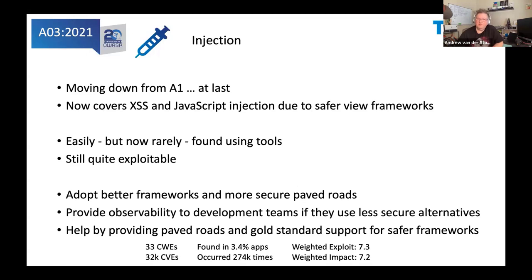A3: Injection is still in the top 10, but it moved down quite a bit. Once we added cross-site scripting and JavaScript Injection, it went up to A3 — it would have been probably A8 to A10 without them. It is easily but now very rarely found using tools, but once found it's still as exploitable as ever. Please think about improving both your testing and helping developers adopt better frameworks. If they're still using older frameworks without cross-site scripting protection and haven't started migrating to React or Vue, they're missing out on automatic XSS protection. Using Jest to test Vue components is dead simple, and you can inject security payloads into that test framework and test it every single build.